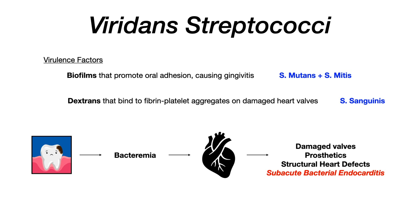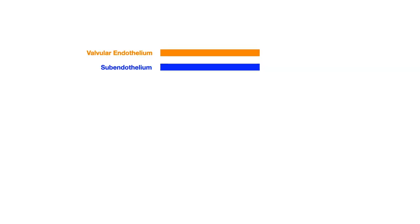Let's explain this one step further, because this pathophysiology shows up a lot on exams. Imagine zooming in closely on a heart valve. Normally, the superficial portion is the valvular endothelium, and underneath that is the subendothelium. In the case of preexisting damage to heart valves, prosthetic heart valves, or structural heart defects, you can assume there's a problem with the valvular endothelium — it has holes in it, and the subendothelium is now exposed. In a normal functioning heart valve, that valvular endothelium would be one smooth, complete layer.